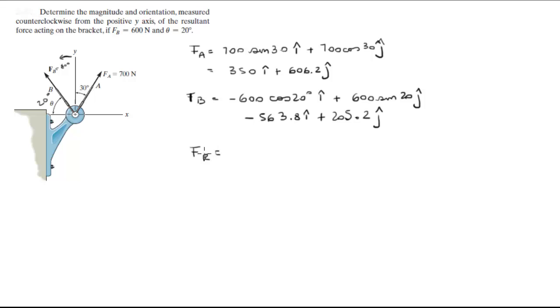To find F_R, all you gotta do is add x component with x component, y component with y component. You're going to get that the resultant force is negative 213.8 in the i direction plus 811.4 in the j direction. It's gonna be somewhere over there, makes sense.